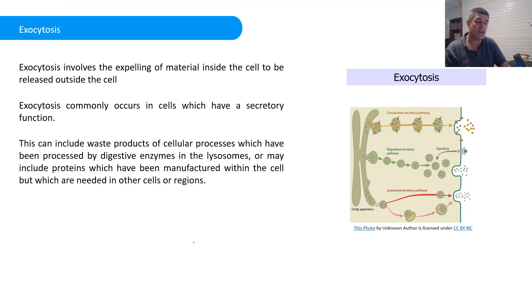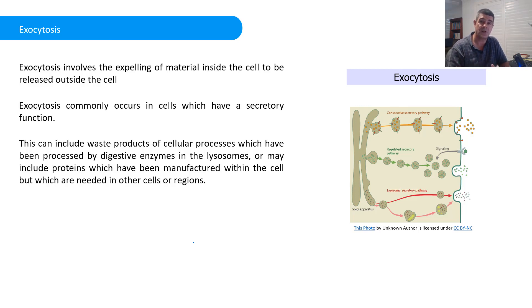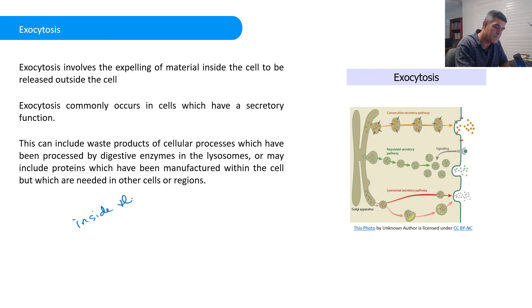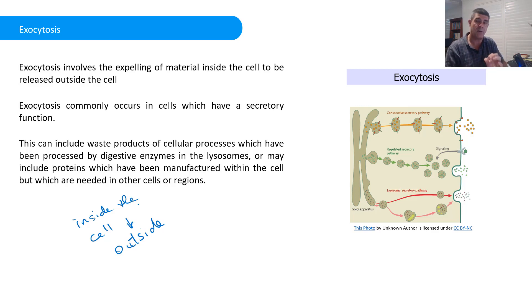Exocytosis, on the other hand, is the process of removing material from the cell. Sometimes this might be waste material; sometimes it might be particular chemicals produced in the cell but needed to be released into other parts of the body — certain secretions, certain proteins produced in the ribosomes that need to be expelled and moved elsewhere. So in exocytosis, we're going from inside the cell to the outside, and it's these little membrane-bound vesicles that move towards the cell membrane and expel their contents.